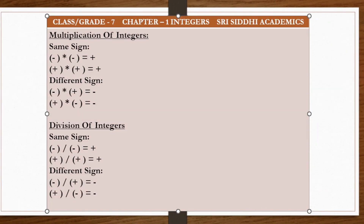Now let's start with multiplication of integers. If two integers of the same sign — like minus-minus or plus-plus — are being multiplied, then the product we get will always be a positive integer. Similarly, if different signs are used — first integer is negative and the second integer is positive — then the product we get will be negative.